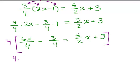So we have 4 times 6x over 4 minus 4 times 3/4, 4 times 5/2x, and 4 times 3.